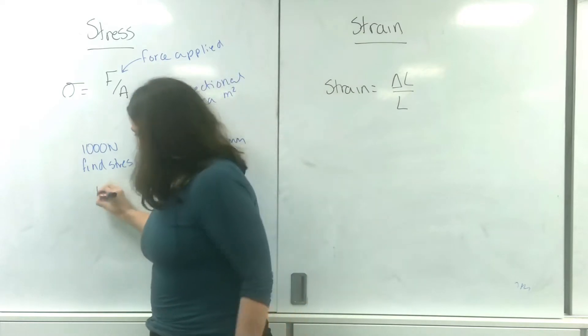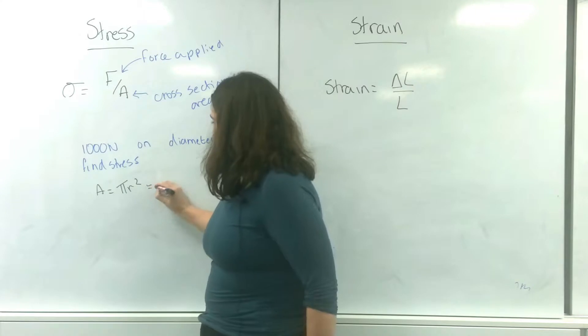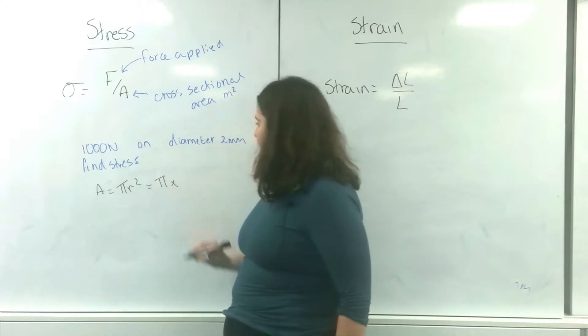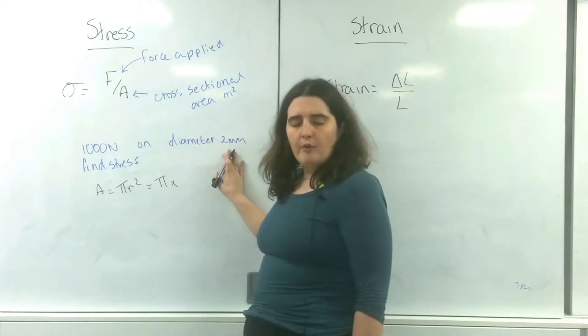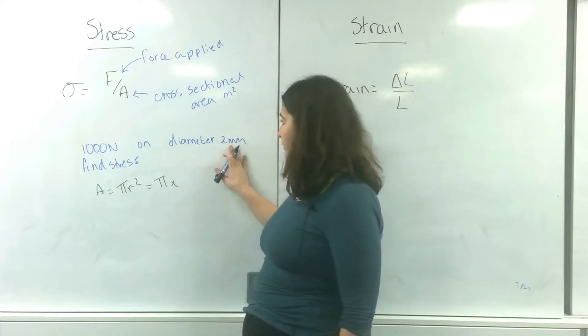So my area is pi r squared. Pi times—now I'm going to need this in meters, and I also need it as radius, so I'm going to need to half it.